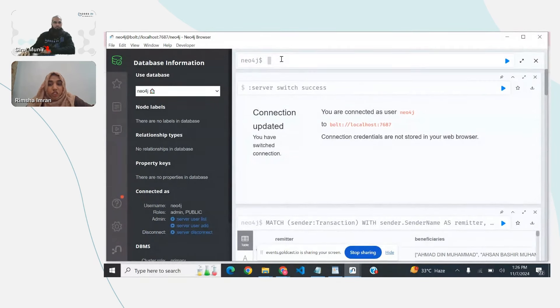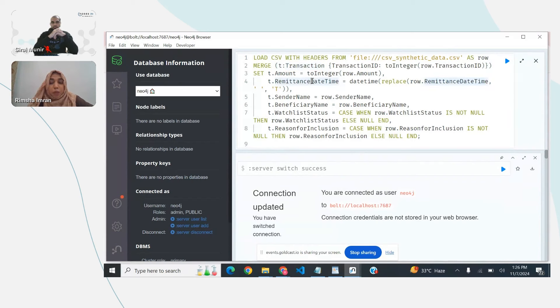Here is our first query. This query is designed to load transaction data into Neo4j, but only creates transaction nodes. Notice it doesn't create any semantics between the sender and beneficiary. This is a common mistake when importing data. It looks like data is loaded correctly, but without relationships, we can't analyze the data effectively. Although this creates nodes, we don't have a way to visualize or analyze connections between different senders and beneficiaries. Let's run the first query.